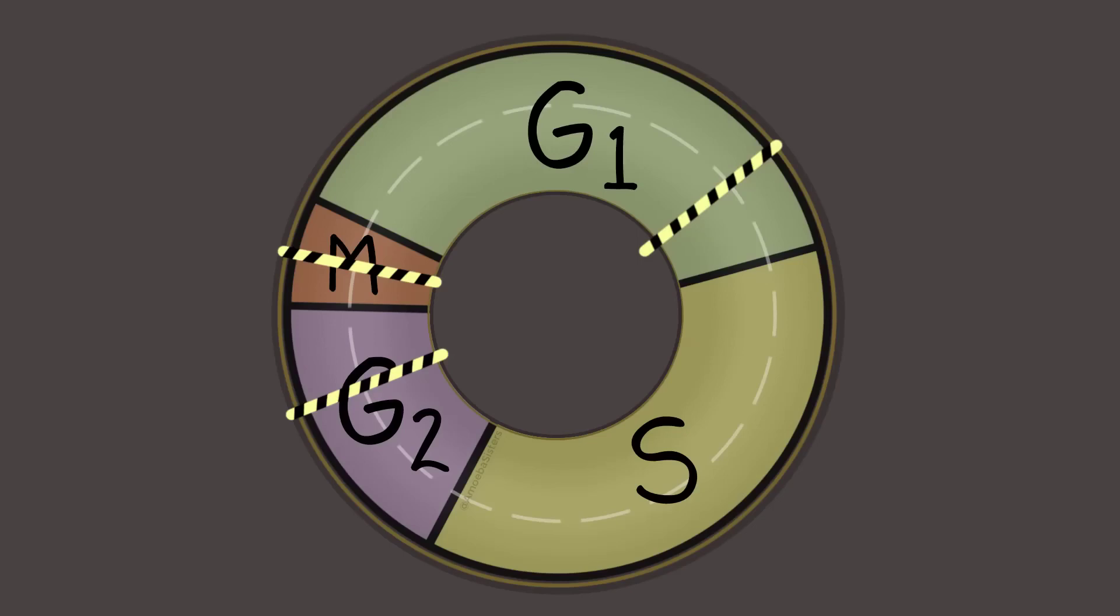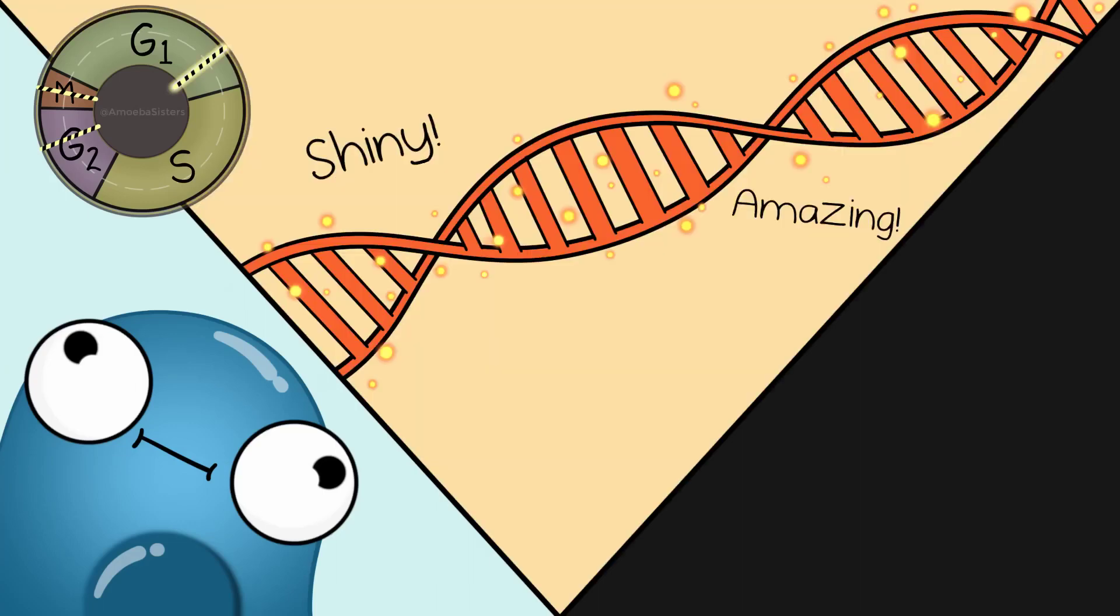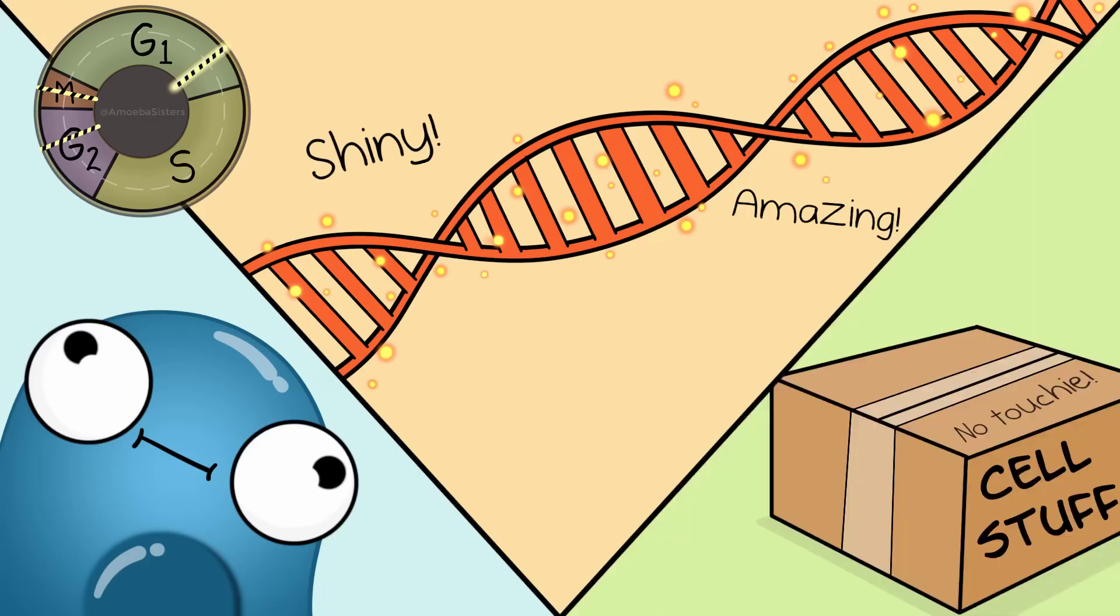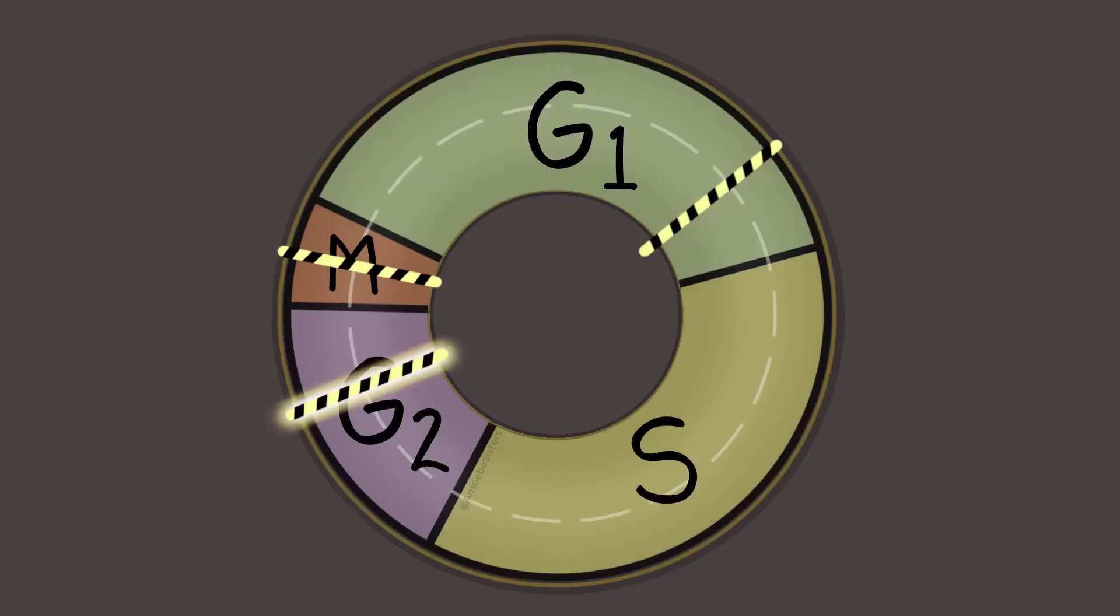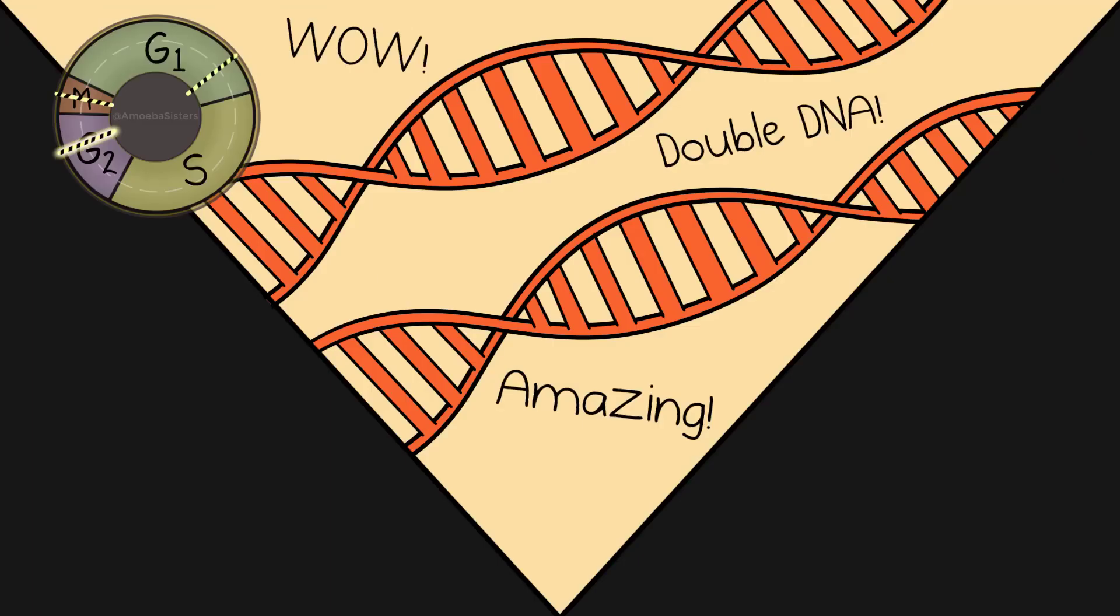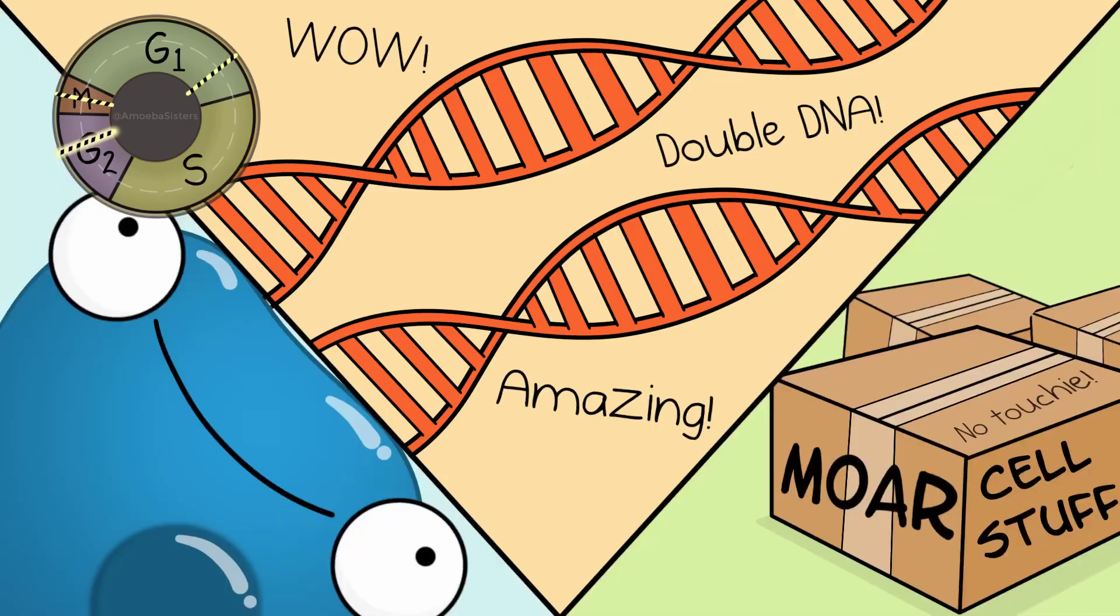So let's take a look at checkpoints. We've got one here in G1. This checkpoint checks, is the cell growing well enough? Is its DNA damaged? Because if it is, you definitely don't want it to move on to S phase where it would replicate DNA. Does the cell have the resources it needs if it were to keep moving on? This checkpoint in G2 checks if the DNA was replicated correctly back in S phase. Is it growing well enough? Does it have the resources it needs to continue?